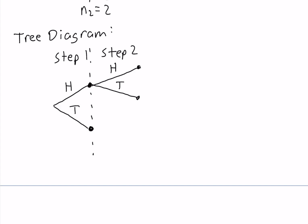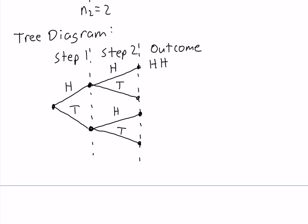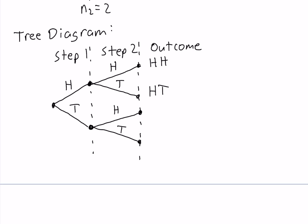If the first coin lands head, the possible outcomes in step 2 are still head or tail. If the first coin lands tail, the possible outcomes in step 2 are again head and tail. So the final outcomes are: head-head, head-tail, tail-head, and tail-tail.